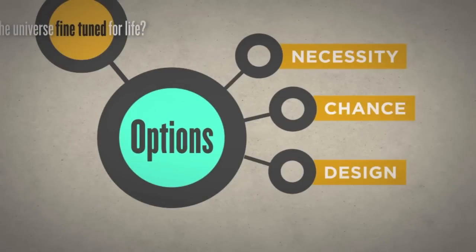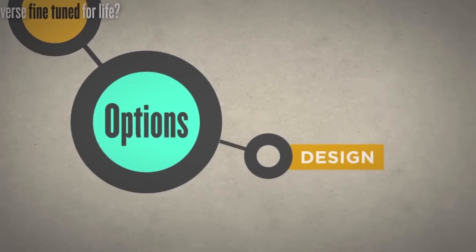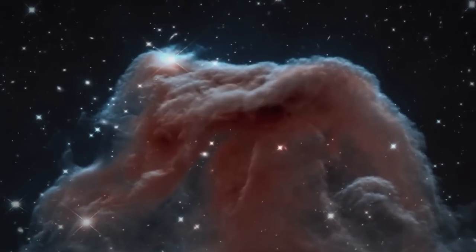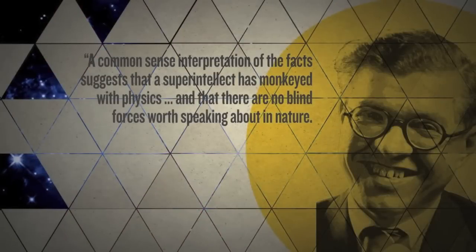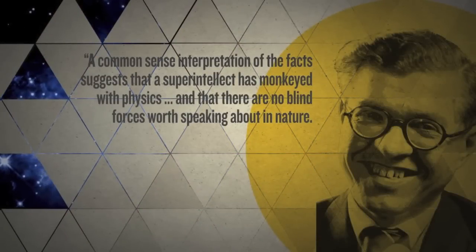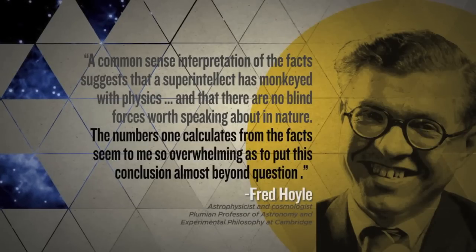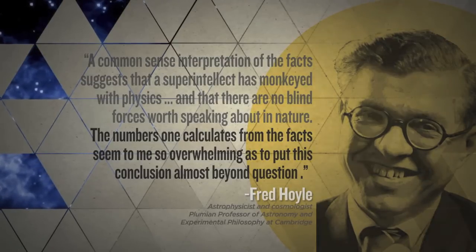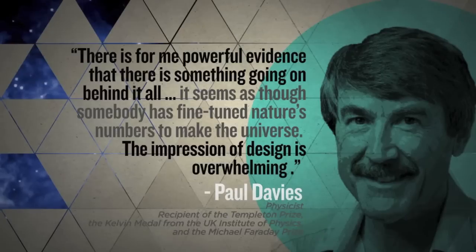Given the implausibility of physical necessity or chance, the best explanation for why the universe is fine-tuned for life may very well be: it was designed that way. A common-sense interpretation of the facts suggests that a super-intellect monkeyed with physics and that there are no blind forces worth speaking about in nature. The numbers one calculates from the facts seem so overwhelming as to put this conclusion almost beyond question. It seems as though somebody has fine-tuned nature's numbers to make the universe. The impression of design is overwhelming.